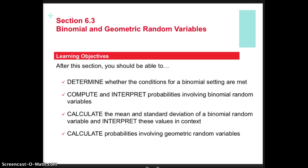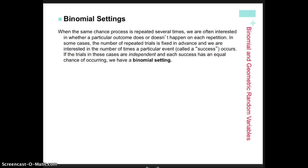After this section, we'll be able to determine whether the conditions for a binomial distribution or a geometric distribution have been met. We'll be able to calculate and interpret the probabilities associated with both binomial and geometric random variables, and calculate the mean and standard deviation of both distributions and interpret them in context.